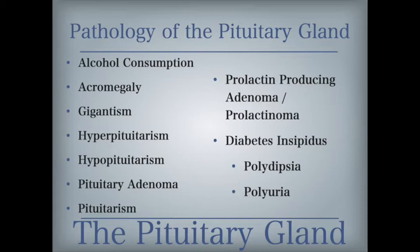An ACTH-secreting tumor stimulates the excess production of cortisol, which causes most cases of Cushing's syndrome. Pituitarism is any disorder of the pituitary function. A prolactin-producing adenoma, also known as prolactinoma, is a benign tumor of the pituitary gland that causes it to produce too much prolactin. In females, this overproduction causes infertility and changes in menstruation; in males, it causes impotence. Diabetes insipidus is caused by insufficient production of ADH or by the inability of the kidneys to respond to ADH, resulting in extreme polydipsia and polyuria — excessive thirst and excessive urination.